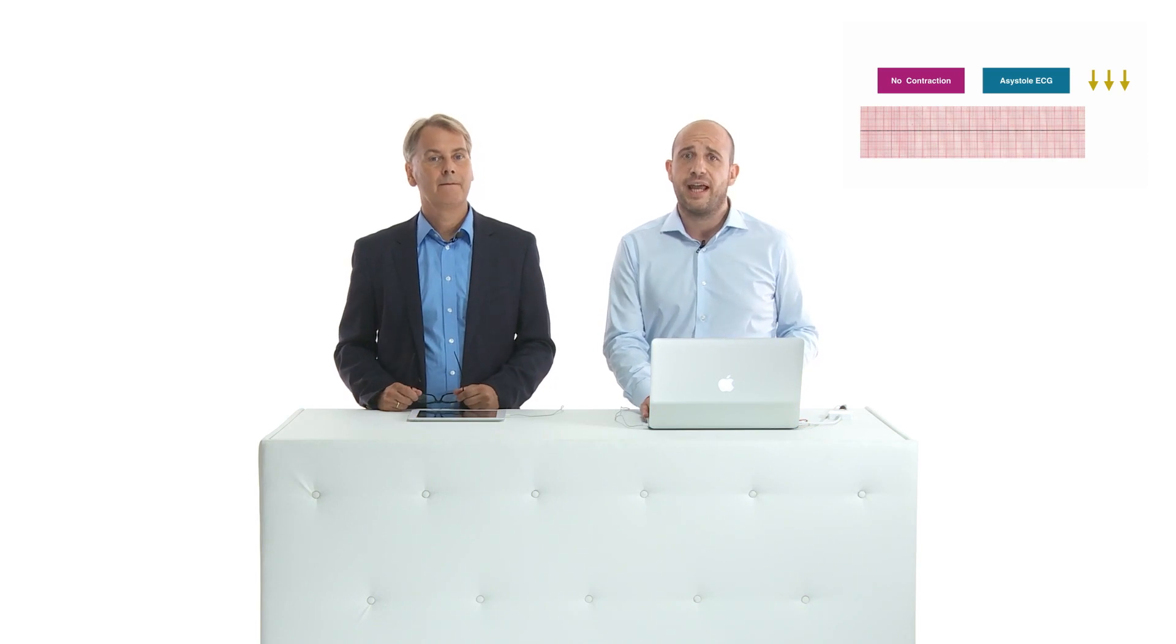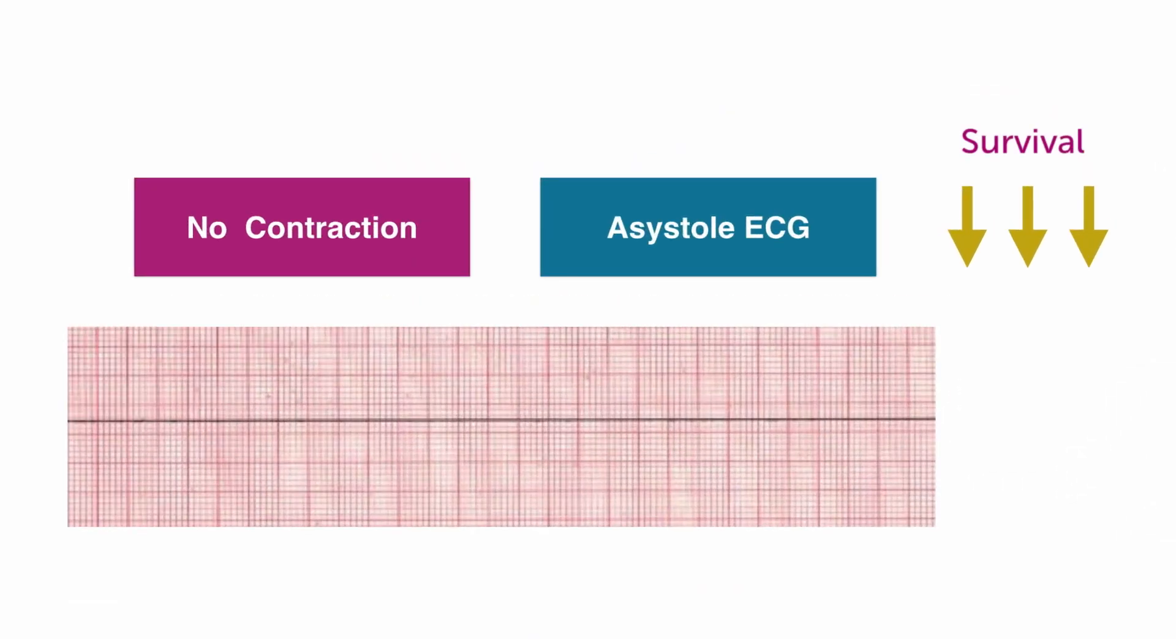In a patient with no ventricular cardiac contraction and an asystolic electrocardiogram, the survival rate is very low despite aggressive advanced cardiac life support resuscitation. In this situation, you won't see contraction on the echo.